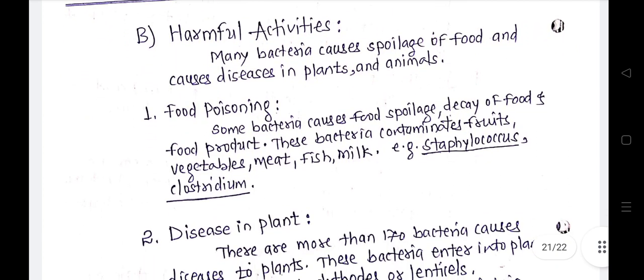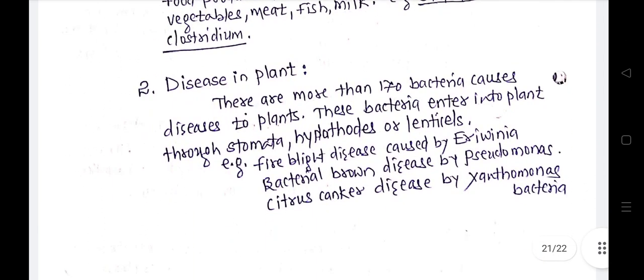Now for the harmful activities of bacteria. Food poisoning and spoilage of food is caused by bacteria, which contaminate fruits, vegetables, meat, and fish. Common food-spoilage bacteria include Staphylococcus and Clostridium. Bacteria also cause many diseases in plants — for example, fire blight disease caused by Erwinia, and citrus canker disease caused by Xanthomonas bacteria.